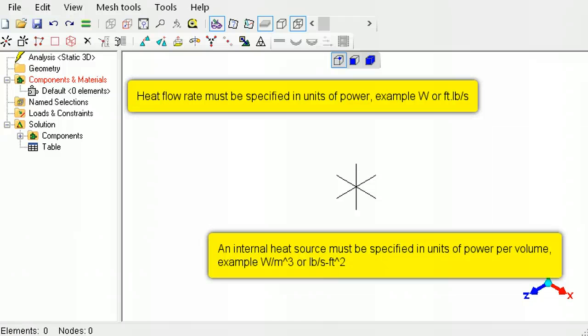The unit for heat flow rate is power. And the unit for internal heat source is power per volume.